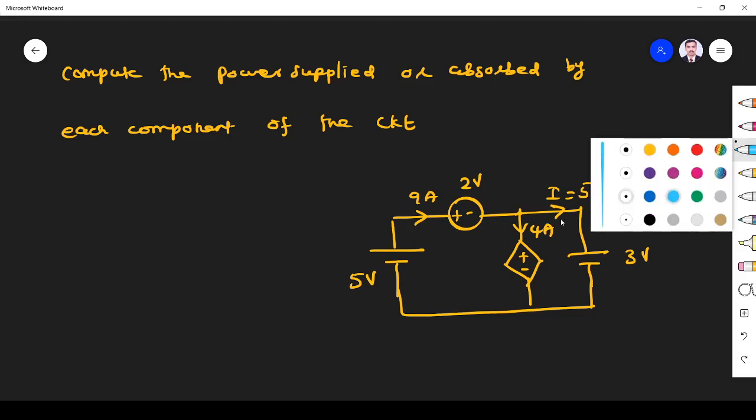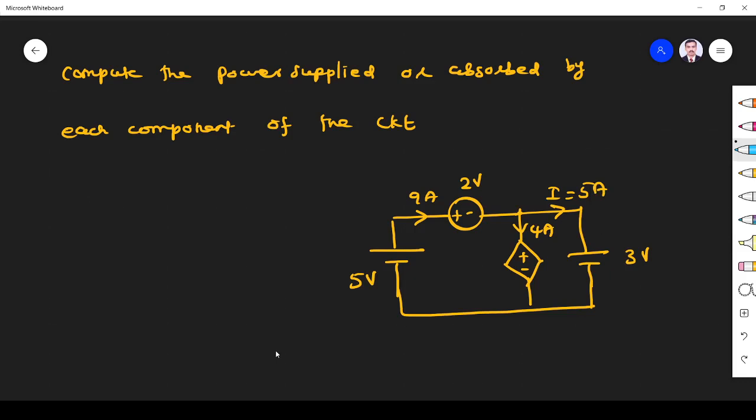Let us see. How many components are there? We have four sources, so we have to find the power delivered or absorbed. Here you see the current is coming out of positive supply. When current comes out of positive supply or positive source, then it is delivering the power or supplying the power.